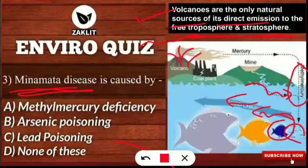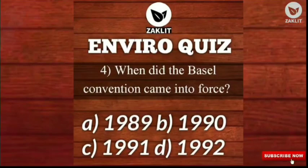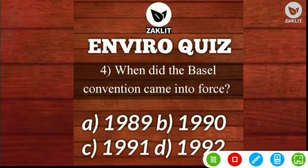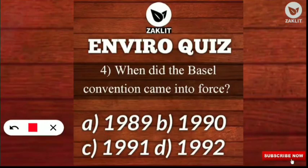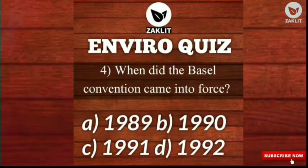The fourth question: when did the Basel Convention come into force? This is one of the very frequent exam questions. The correct option is D — 1992. The Basel Convention is one of the most frequently asked questions, so make sure you know the details.